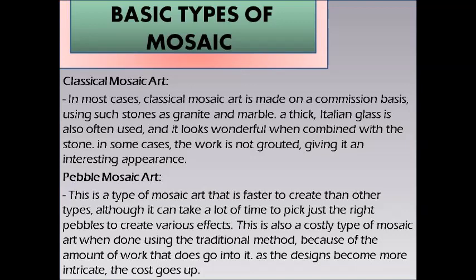The basic types of mosaic include: classical mosaic, typically made on a commission basis using stones such as granite and marble, often combined with iron glass; pebble mosaic art, faster to create but time-consuming to select the right pebbles, and costly when done using the traditional method — as designs become more intricate, cost increases.